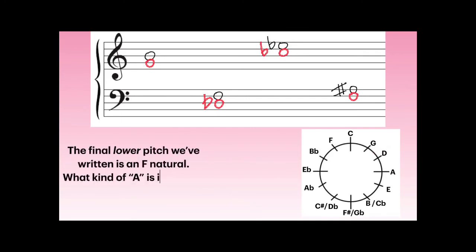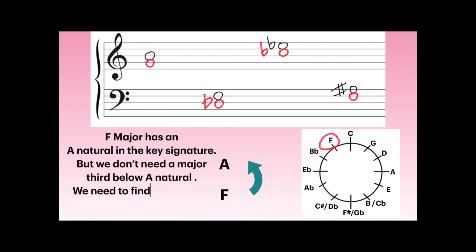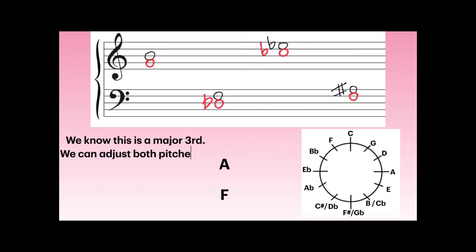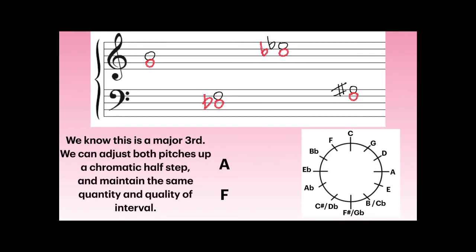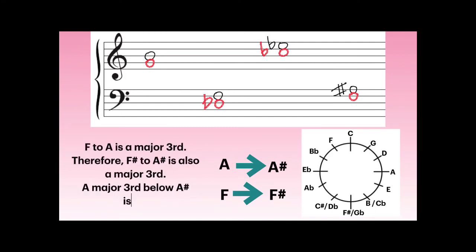The final lower pitch is an F natural. What kind of A is in the key signature for F major? F has one flat — B-flat — so we have an A natural in the key signature. F major has an A natural, but we don't need a major third below A-natural; we need a major third below A-sharp. We can adjust both pitches up a chromatic half-step: F goes up to F-sharp, A goes up to A-sharp. F to A is a major third; therefore, F-sharp to A-sharp is also a major third. A major third below A-sharp is F-sharp.